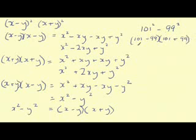101 minus 99 gives us 2. 101 plus 99 gives us 200. 2 times 200 gives us 400.